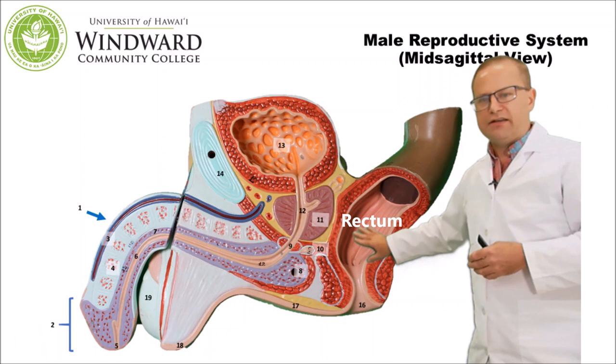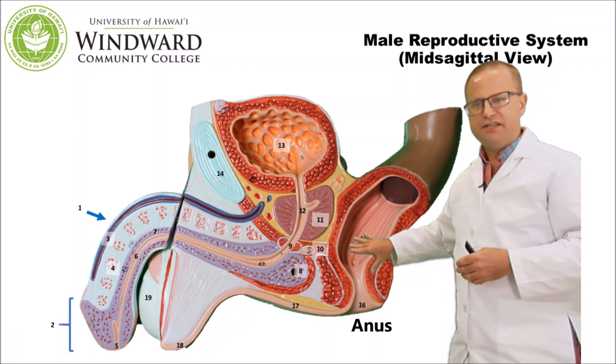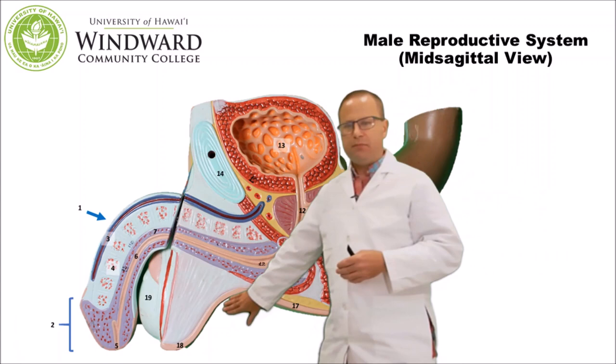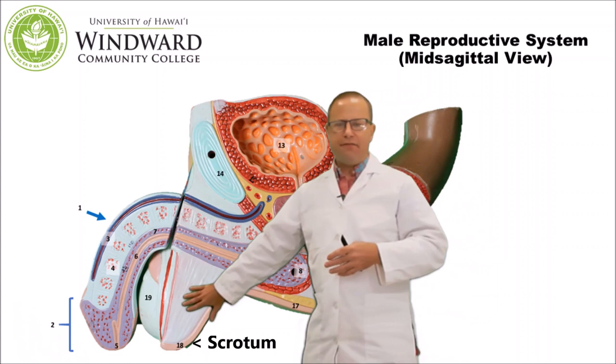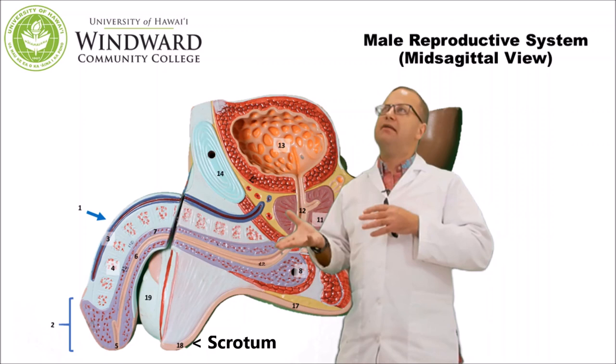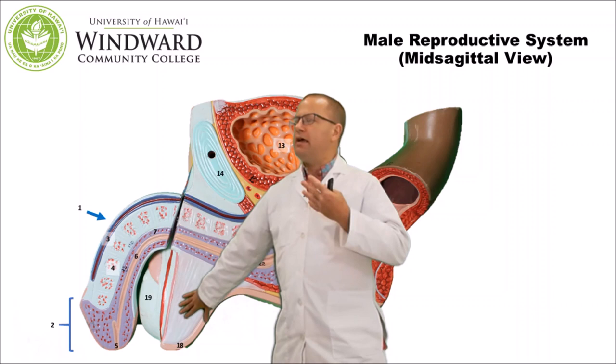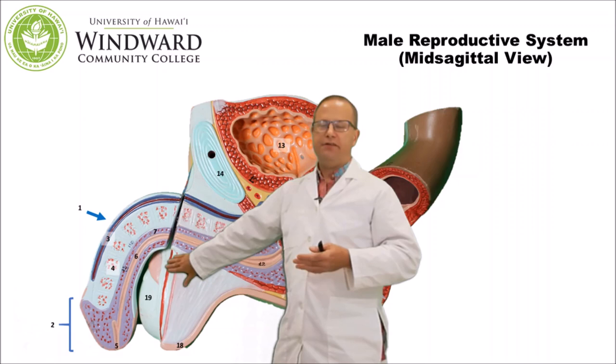Also nearby are the rectum and anus — pointed out because they're close to everything else. The area of skin between the genitalia and anus is called the perineum, which contains lots of nerve endings important in the human sexual response. Below that is the scrotum. The scrotum is unusual in that the male gonads hang outside the body — males cannot make sperm at 37°C, so the scrotum allows the testes to reside outside the body and remain cooler. Inside are the testis and the epididymis.